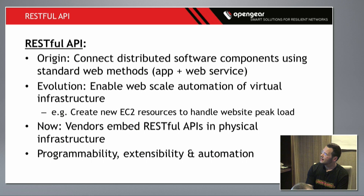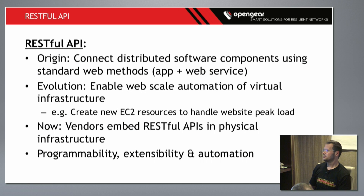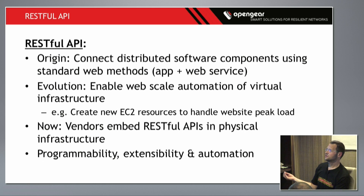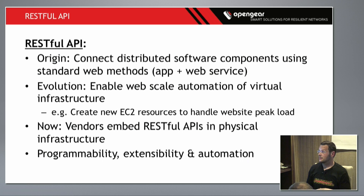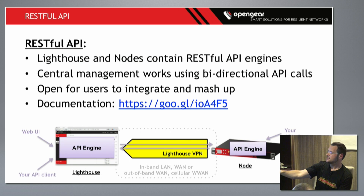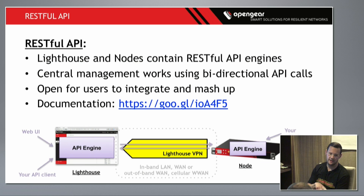The RESTful API — for those playing at home, a really quick primer. RESTful APIs sensibly started as ways for smartphone apps to get data from heavier web services, and where they've really exploded is in the management of virtual infrastructure, like Amazon EC2 — you can spin up and pull down compute nodes to handle website peak load. What we're doing now is embedding RESTful APIs in physical infrastructure to allow similar levels of automation and programmability. There's an engine running in both Lighthouse and the nodes. There's a link to our documentation in RAML with a nicely formatted HTML view so you can have a quick look at our RESTful API docs.